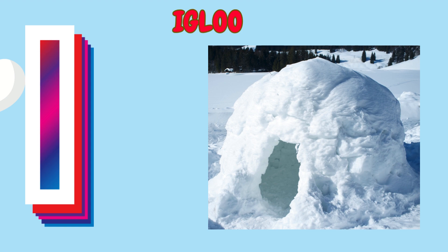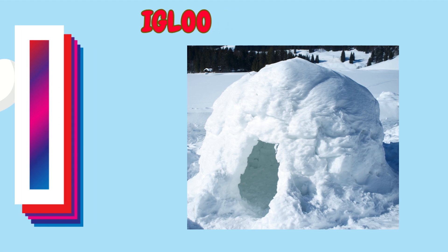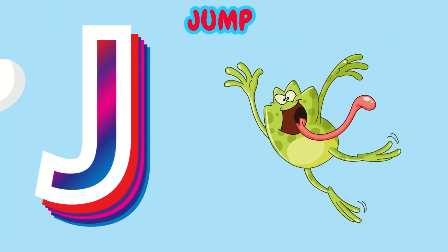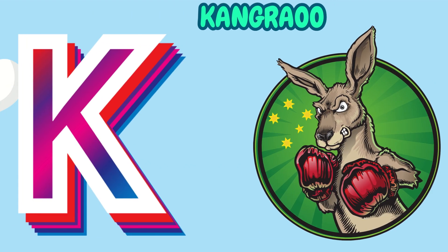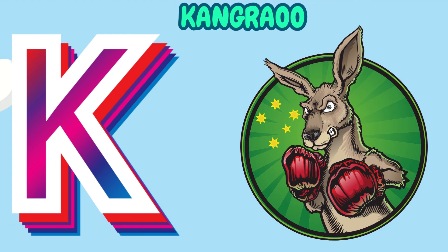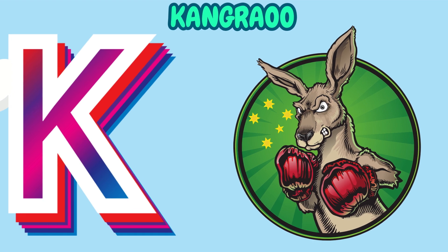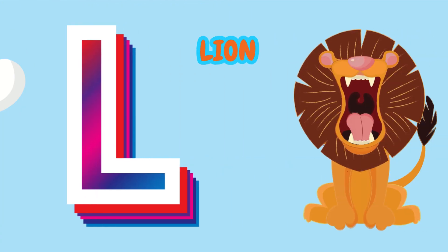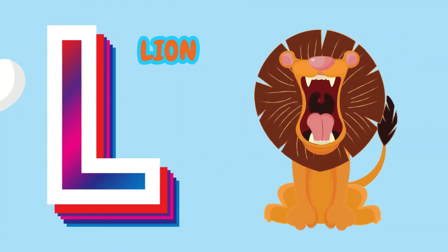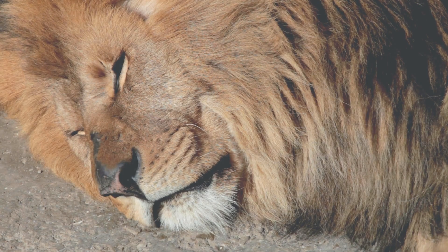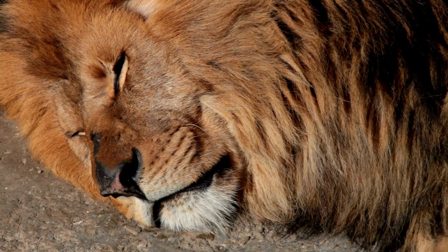I is for Igloo. I-I-Igloo. J is for Jump. J-J-Jump. K is for Kangaroo. K-K-Kangaroo. L is for Lion. L-L-Lion.